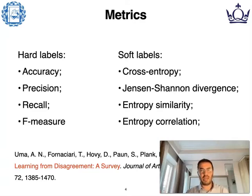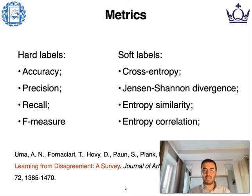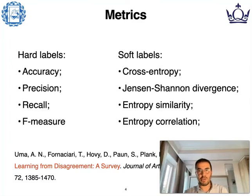Concerning the metrics, we use standard metrics for hard labels like accuracy, precision, recall, and F-measures. In the case of soft labels, agreement in the literature is not so commonly shared — it is a bit more difficult to evaluate soft labels. We use metrics considered reliable: cross-entropy, Jensen-Shannon divergence, entropy similarity, and entropy correlation. For a better explanation of these, I point you to the 'Learning from Disagreement' survey paper, which goes beyond the scope of this presentation.